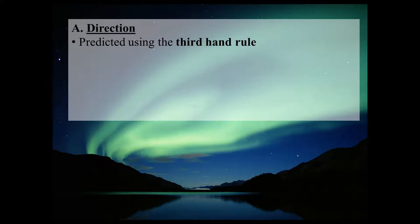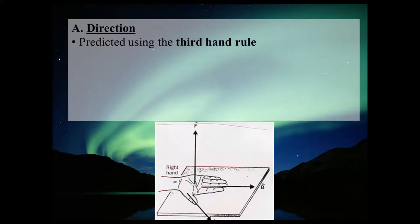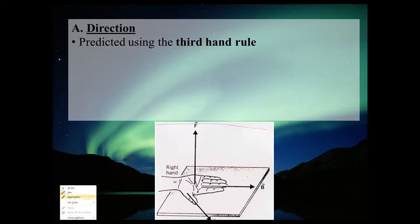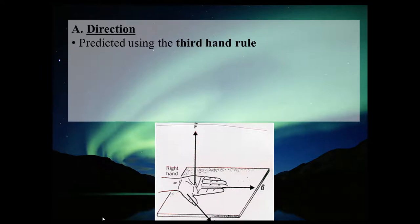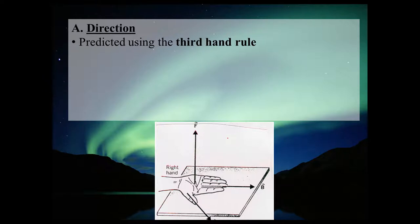The third-hand rule can be used to predict what direction the magnetic deflecting force will be. Here's where things get a bit more complicated — we need to introduce another part of our hand to represent something. When we deal with magnetism, we deal with vectors in a three-dimensional grid. So I'm going to draw a three-dimensional grid: a y-axis, an x-axis, and a z-axis — three different axes representing three different directions, all perpendicular to each other.